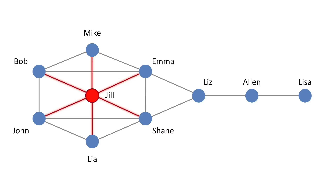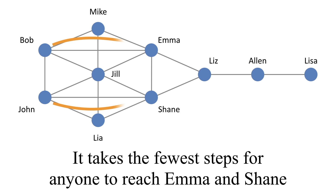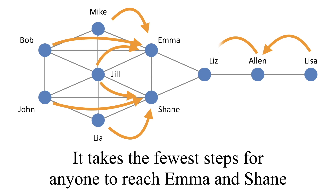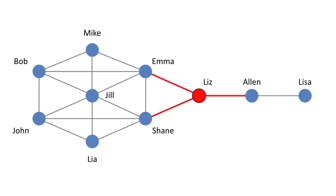Notice that we're getting a different person than before. In our degree centrality, Jill was central — Jill sends out lots of ties, so Jill has a high out-degree centrality. But with in-degree centrality, Emma and Shane began coming into the story. Our closeness centrality measures also confirmed Emma and Shane as important people because they are closest to everyone else. But now, looking at brokerage and how people connect the network together, we see that Liz is an important person.